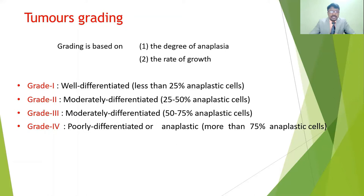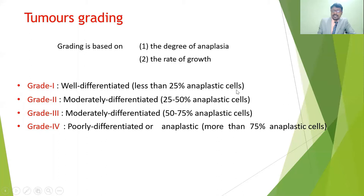The grading of tumor severity depends on two factors: the degree of anaplasia and the rate of growth. According to standardized classifications, tumors are classified into four grades. Grade 1 is well-differentiated, meaning anaplastic cells are less than 25% — the appearance, shape, and size still look relatively normal.